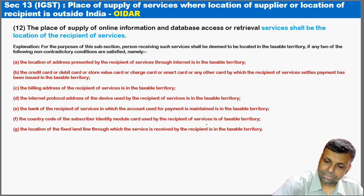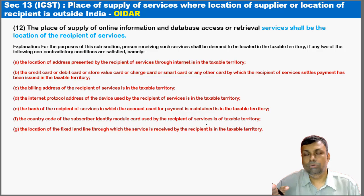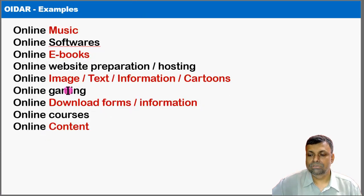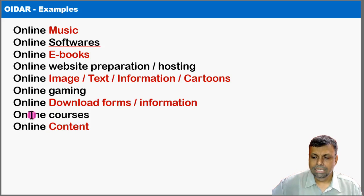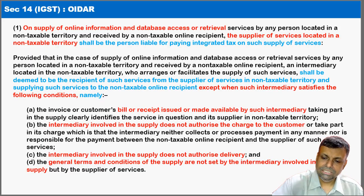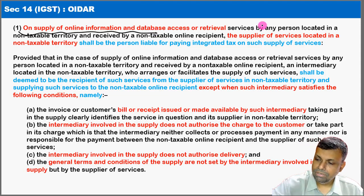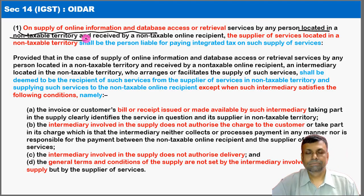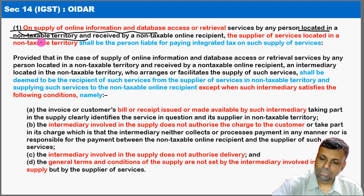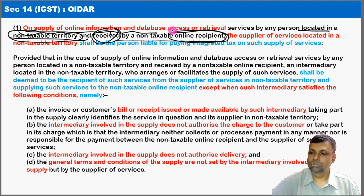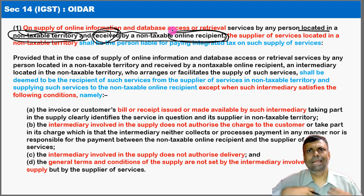Section 14 clarifies the situation where online content services — such as online music, software, e-book downloading, games — are provided. These are examples of OIDAR (Online Information and Database Access Retrieval) services. If there is any supply of online information by a person located in a non-taxable territory, Section 14 applies.